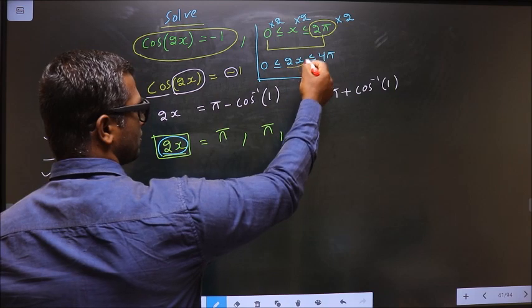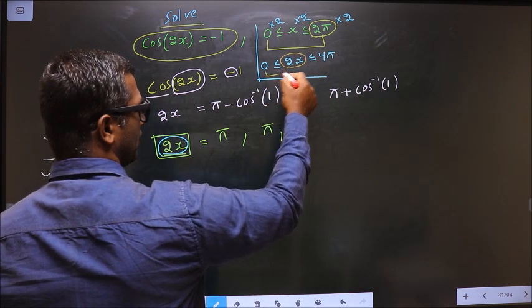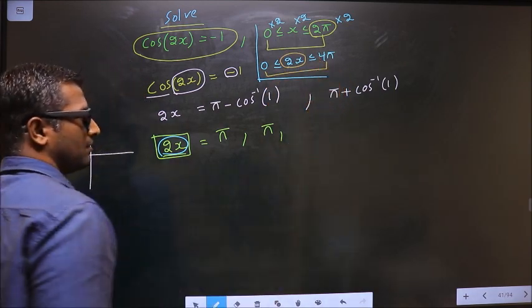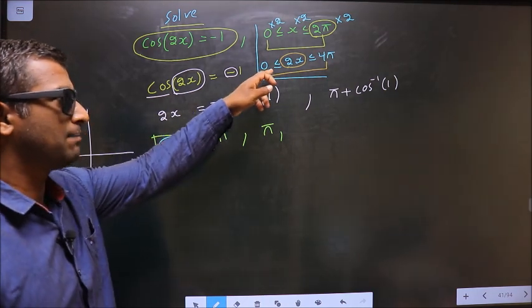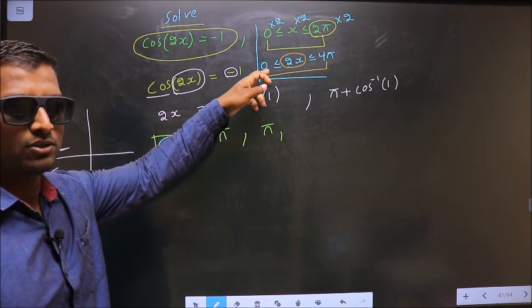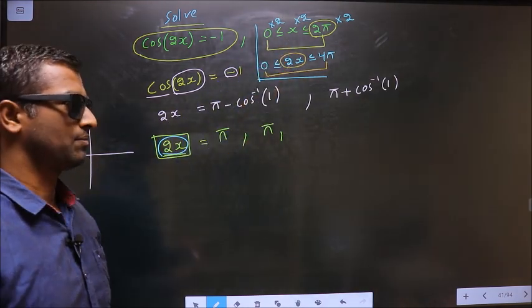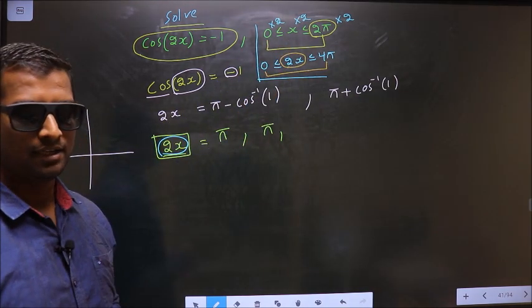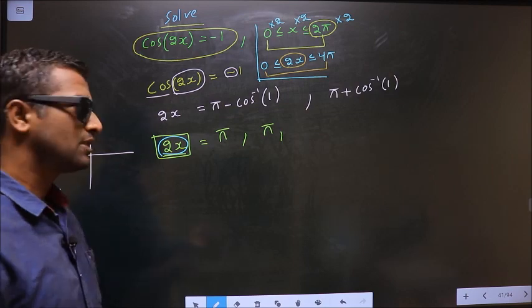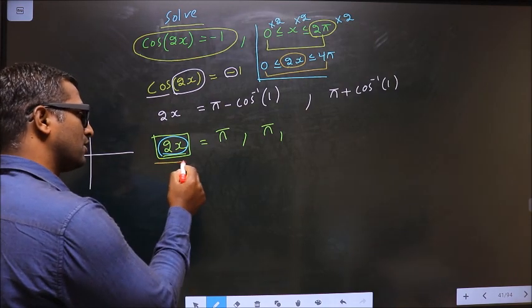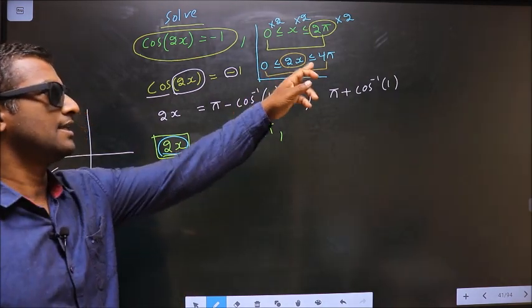Now the values for 2x should lie in this interval. When this happens, then automatically the values for x will lie in this interval. Am I clear? Now we should write all the values for 2x in this interval.